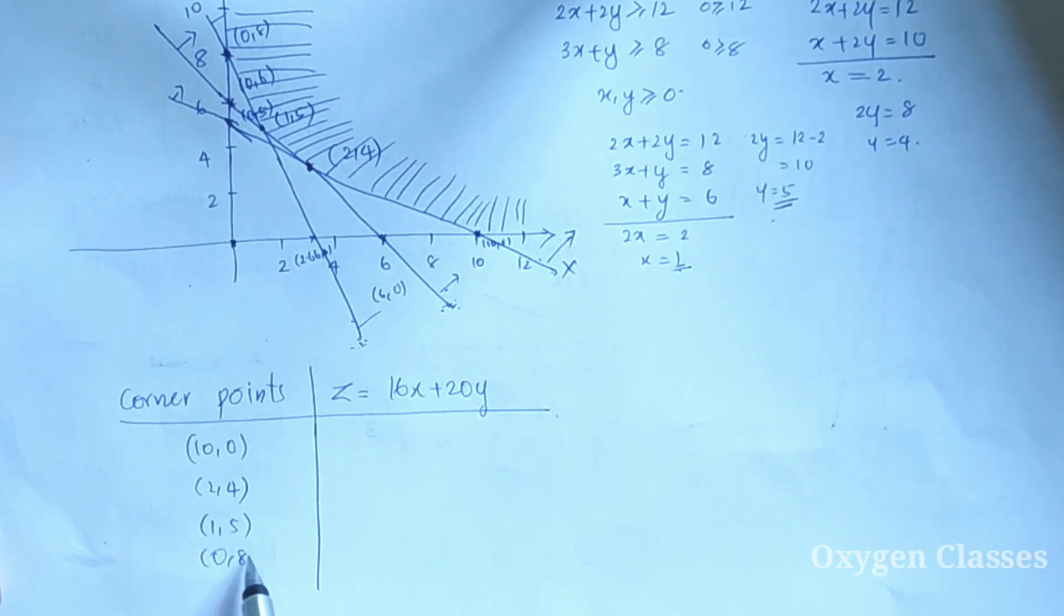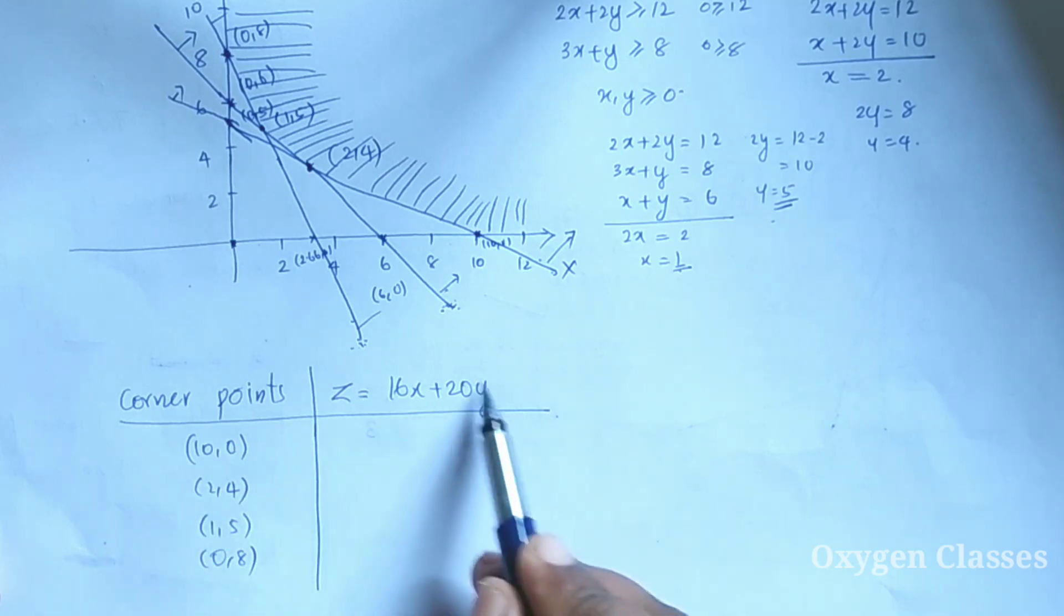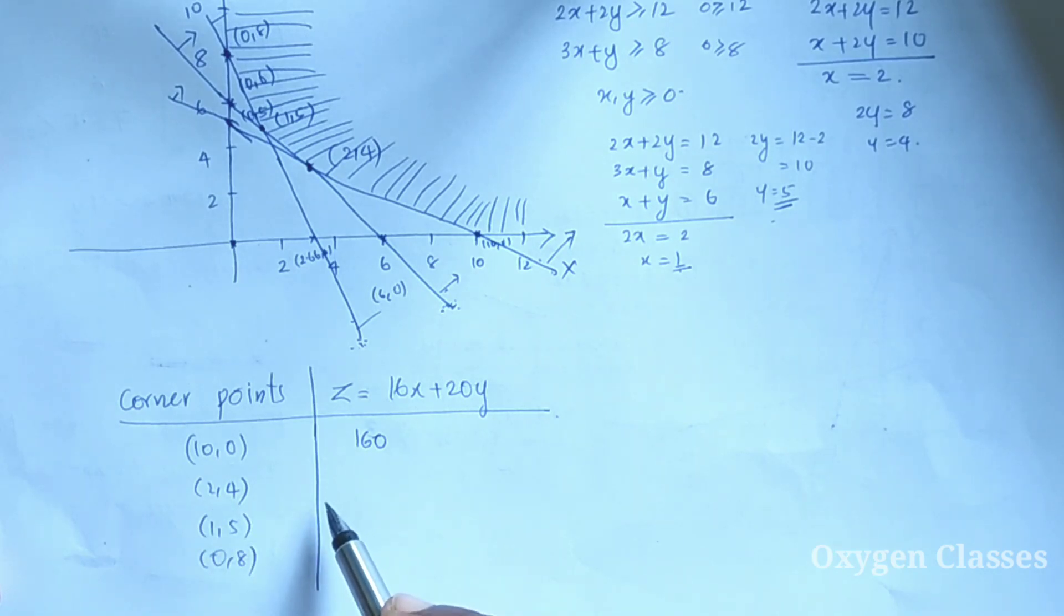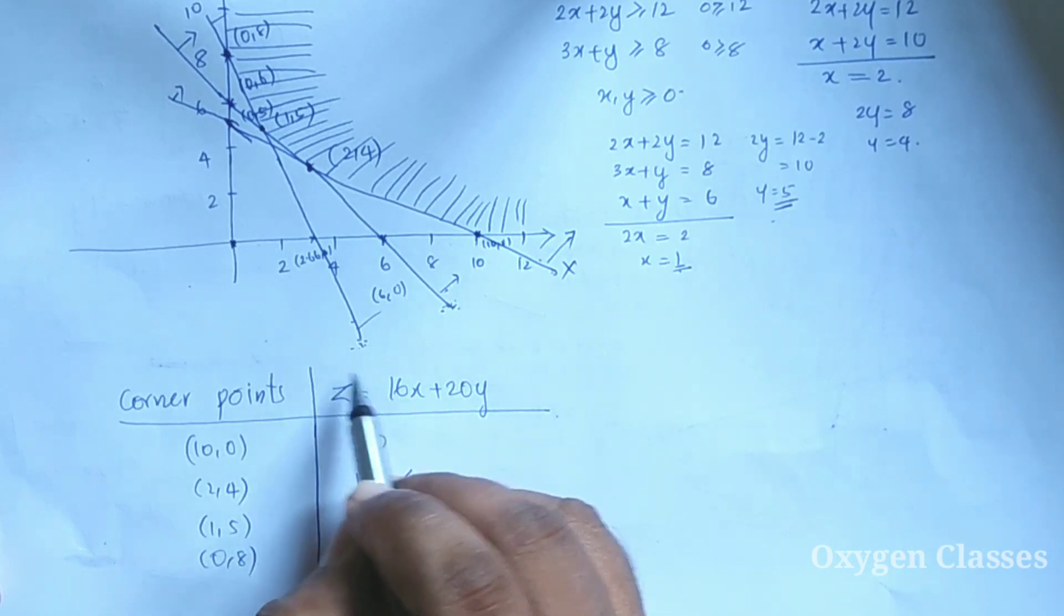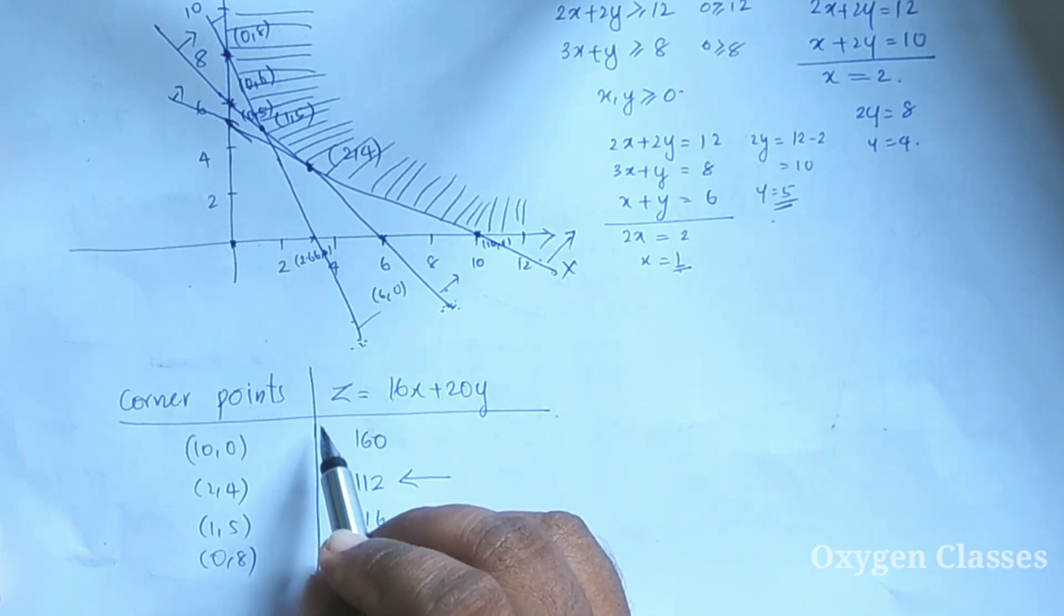The corner points are (10, 0), (2, 4), (1, 5), and (0, 8). Substituting these values into the objective function Z equals 16X plus 20Y: at (10, 0) we get 160, at (2, 4) we get 112, at (1, 5) we get 116, and at (0, 8) we get 160.